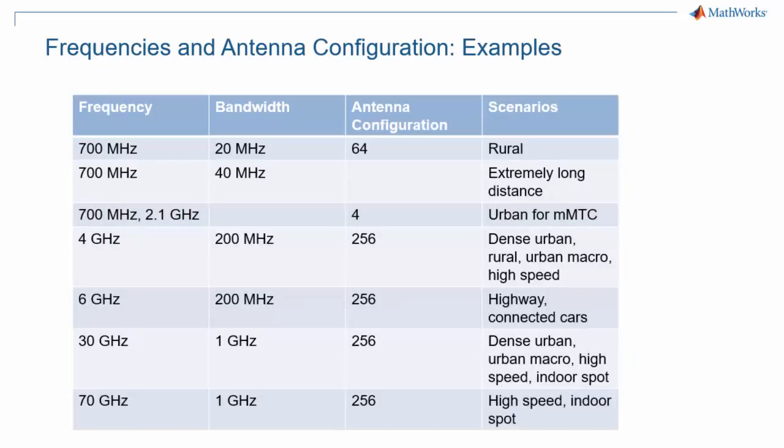Here are a few example configurations from the scenarios listed on the previous page. When you look at the 38.913 document, you'll find antenna configurations of up to 700 antennas, and you may notice bandwidths envisioned to exceed the 400 MHz capability defined in the current version of the standard. Also of interest is the wide range of carrier frequencies, from 700 MHz all the way to 70 GHz.